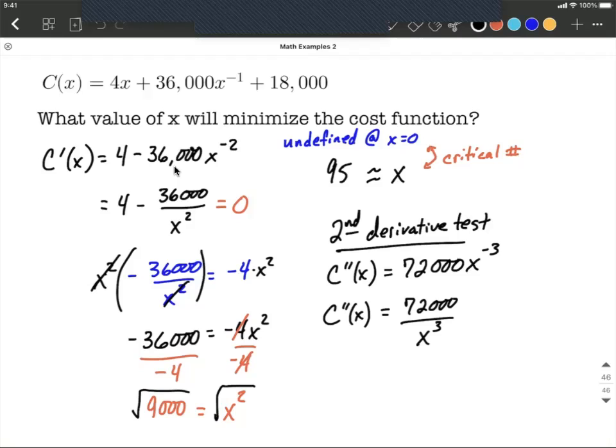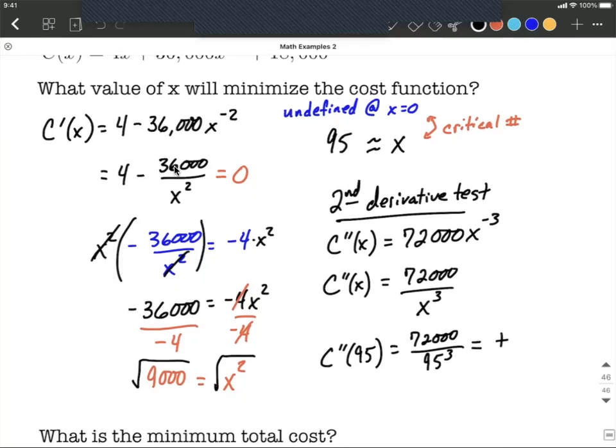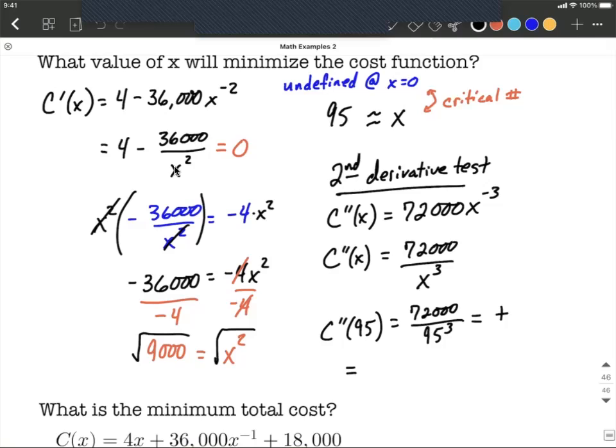Now for the second derivative test we want to evaluate that 95 into the second derivative. So c double prime of 95 is going to be 72,000 divided by 95 cubed. Now what we really care about is whether it'll be positive or negative. Well in our case we have a positive value in the numerator and a positive value cubed in the denominator. So overall this is going to be positive. What that tells us is this is concave up because a positive value came out of our second derivative.